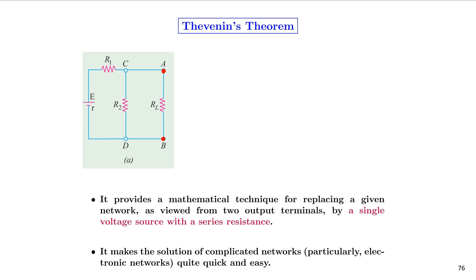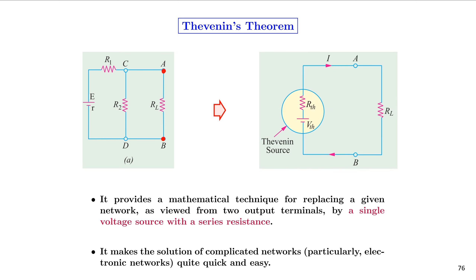If we have a circuit as shown in figure A, having a voltage source E with an internal resistance R, with a network of resistors R1 and R2, and a load resistor RL connected at points A and B, then according to this theorem, this circuit can be reduced into a simple one having a voltage source Vth, a series resistor Rth, and the load resistor RL.